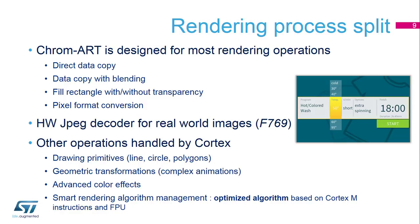Concerning the rendering process split, the Chromart is designed for most rendering operations: direct data copy, data copy with blending, fill rectangle with or without transparency, and pixel format conversion. Some STM32 products also include a hardware JPEG decoder for real-world images. Other operations are handled by the Cortex, including drawing primitives such as lines, circles, polygons, geometric transformations for complex animations, advanced color effects, and the smart rendering algorithm management. Even this optimized algorithm is based on Cortex-M instructions and the floating point unit, so even if done by the Cortex itself, it doesn't mean it's not efficient.